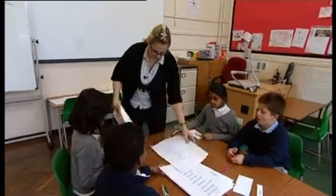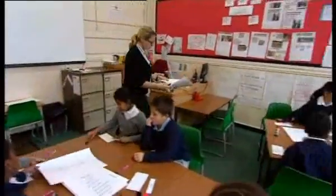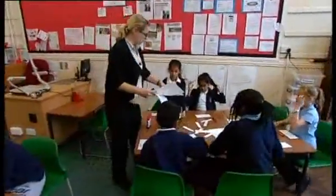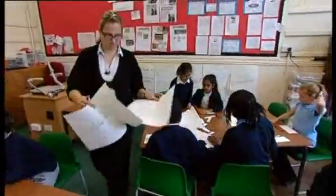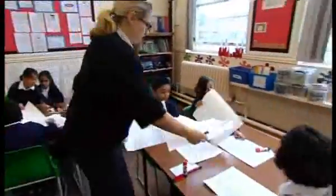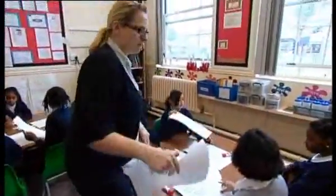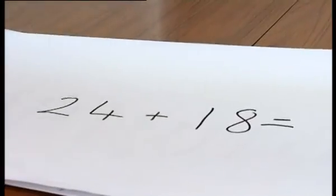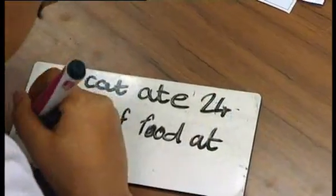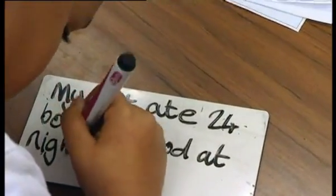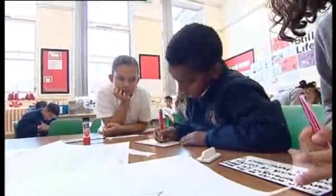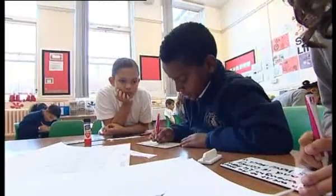The final part of the lesson, I gave each group a calculation and they had to use the vocabulary they'd been sorting to write a problem to match that calculation. I got the children to write their own problems to match the calculations as a way of turning it round — to get them to see how the vocabulary they choose in the question influences what the calculation would be.